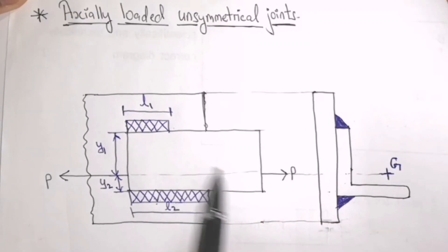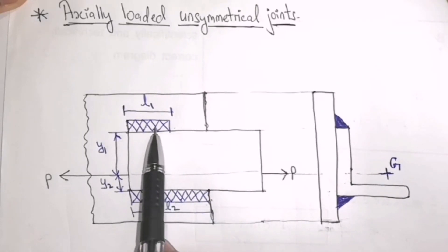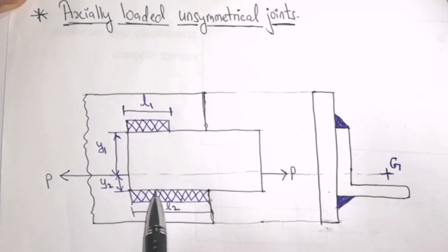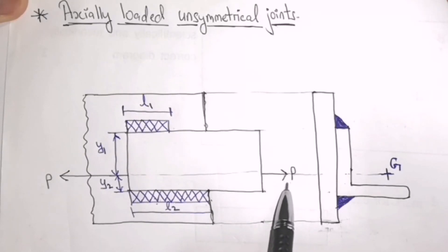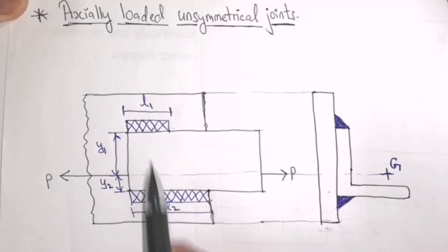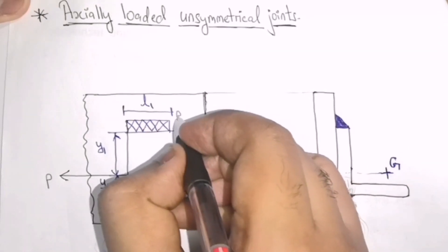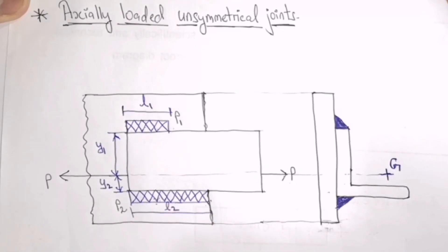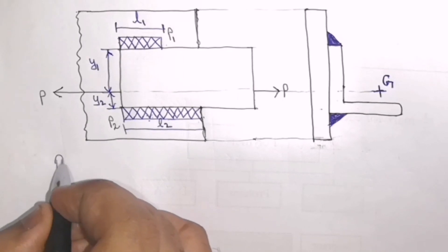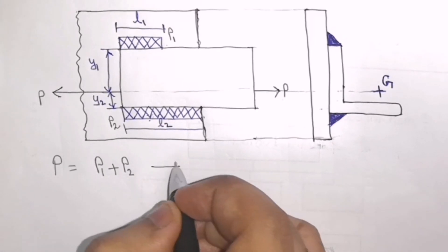When this load is applied axially to the plate, both welds along the direction of the force will experience shear stress — this weld will be failing by shear. The total load P will be shared by these two welds. Let this weld bear a load of P1 and this weld bear a load of P2. Hence, the total load P is equal to P1 plus P2. Let this be equation number 1.